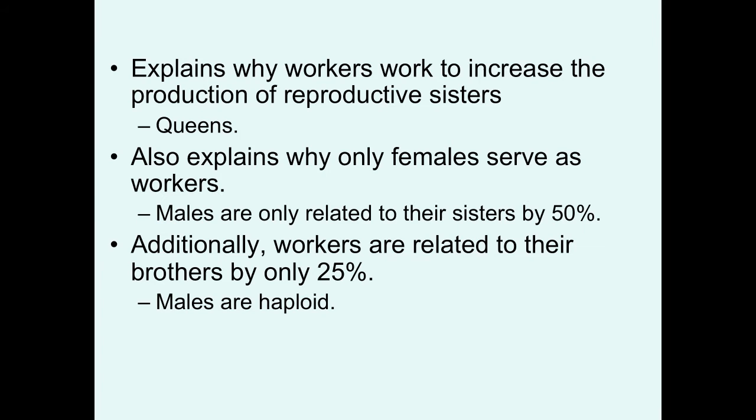Workers are related to their brothers by only 25%, because males have half the amount of DNA — males are haploid. This may seem confusing: males are related to their sisters by 50%, but sisters are related to their brothers by only 25%. It boils down to the fact that males only have half the amount of DNA.